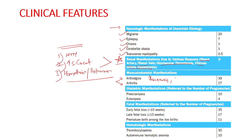Musculoskeletal manifestations include arthralgias, which are more common than arthritis, as well as bone marrow necrosis, muscle infarction, and osteoporosis. Pregnancy morbidity can present as preeclampsia, eclampsia, early fetal loss (less than 10 weeks of gestation), late fetal loss (10 weeks or more), or premature live birth before 34 weeks of gestation. Hematological manifestations include thrombocytopenia and autoimmune hemolytic anemia.